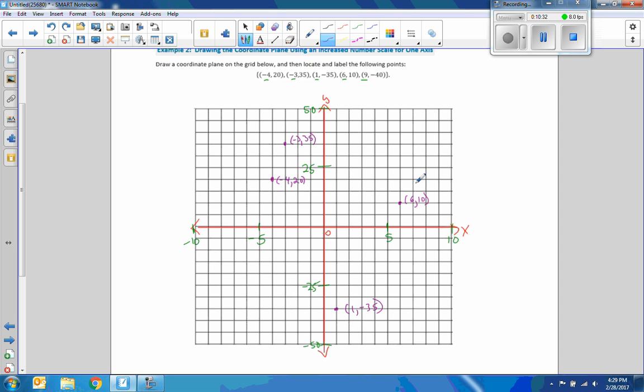So I do the point negative 4 comma 20. Then I'm going to graph negative 3, 35. Negative 1, negative 2, negative 3. 5, 10, 15, 20, 25, 30, 35 is right here. That is negative 3, 35. And then 1, negative 35, over 1, down 25, 30, 35. So 1 comma negative 35. And 6, 10 is over 6, up 5, 10. Don't forget your scale. And then finally 9, negative 40. 9 is all the way over here. But negative 40 is 5, 10, 15, 20, 25, 30, 35. So this is 9, negative 40. So there are the 5 points. 1, 2, 3, 4, 5 points. So this was also a unit of measurement scaling exercise. So you can scale stuff so it fits well.